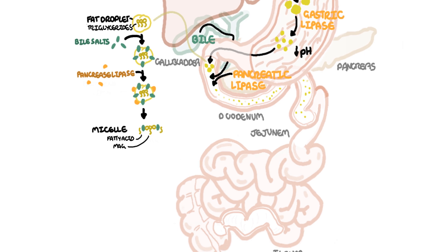These micelles are essentially a ball composed of the broken down products of fat — the building blocks of fat. Micelles are composed of bile salts, fatty acids, monoglycerides, and cholesterol, and all of this is also coated by phospholipids.